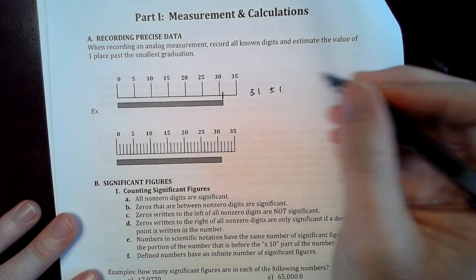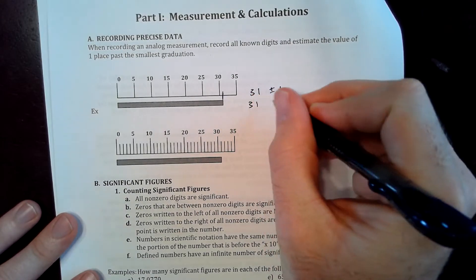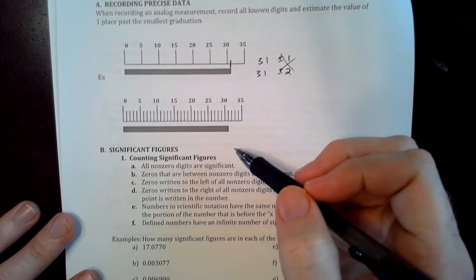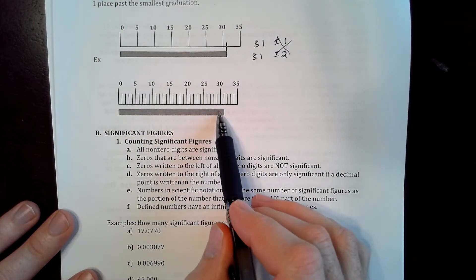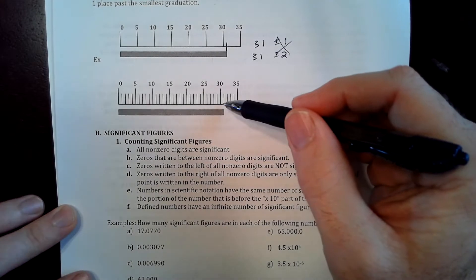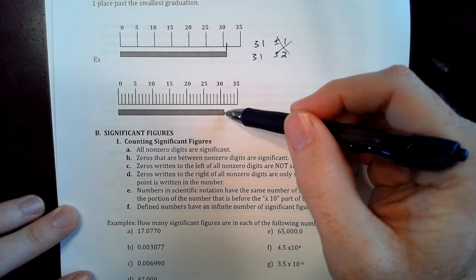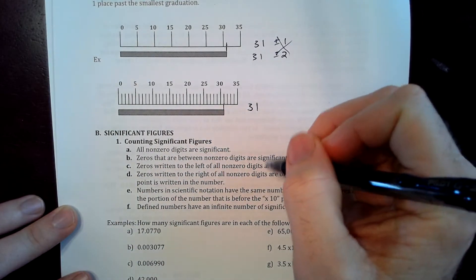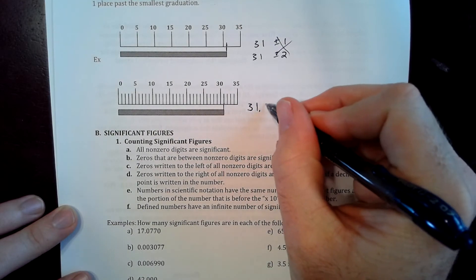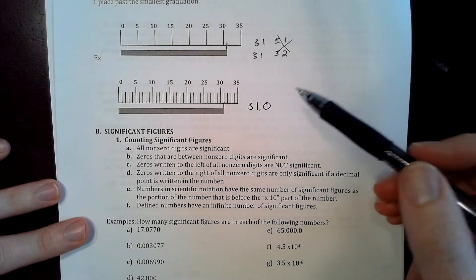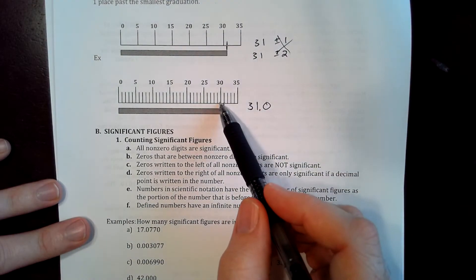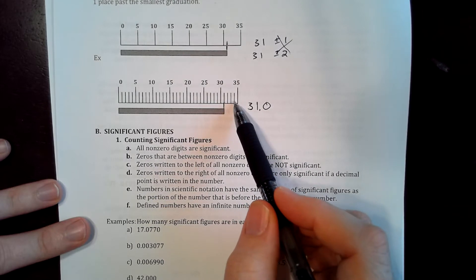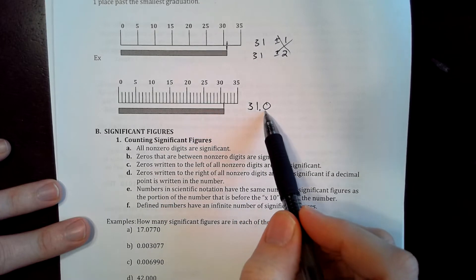Later on you'll learn that you'll do 31 plus or minus 1 or 31 plus or minus 2. Don't worry about those uncertainties at the moment. With this one right here, what you are going to look at is let's say it's exactly right on 31 again, but we're not going to call it 31. We're going to call it 31.0. That's because we're going to approximate one more digit than the instrument gives us. The instrument was giving us one increment, each increment was worth one, so we're going to give one digit past that.